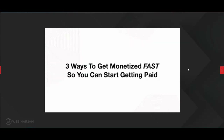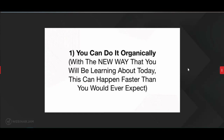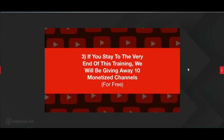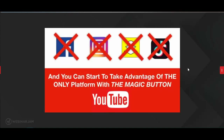Number one, you can do it organically. With the new way, this can happen faster than you'd ever expect. Number two, there's actually a way to buy a monetized channel for $200, which most people don't even know is an option. And number three — because you're giving us your time at this live event — we're actually going to be giving away 10 monetized channels completely free so you can start getting paid day one on YouTube. But you have to stay to the very end to be eligible.